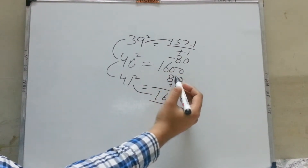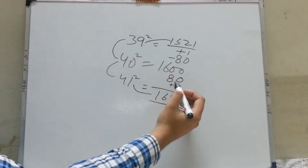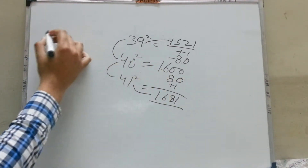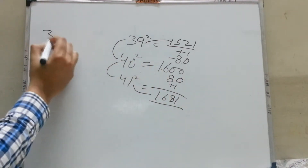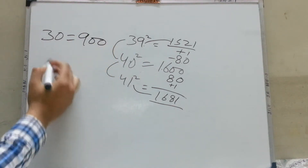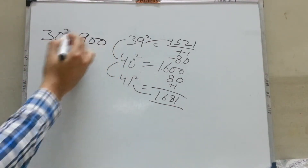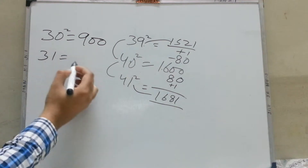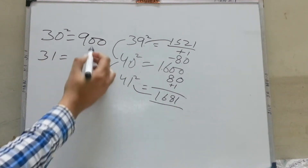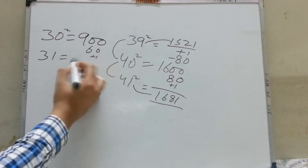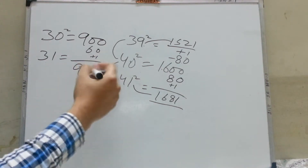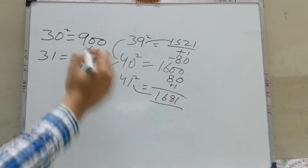This is a universal formula — you can apply it on almost any digit. For example, if you know the square of 30, the answer is 900. You can calculate the square of 31: add 30 twice, which is 60, plus 1 — answer is 961. You can calculate this equation in your mind.